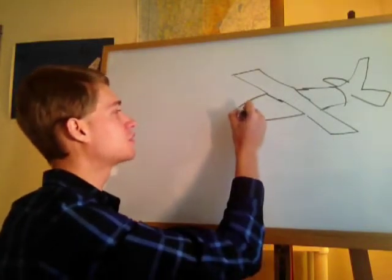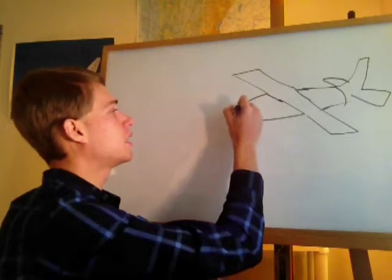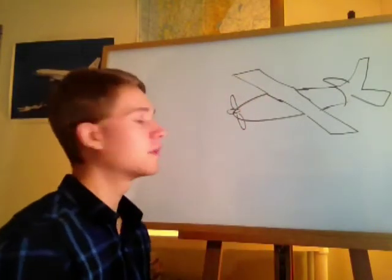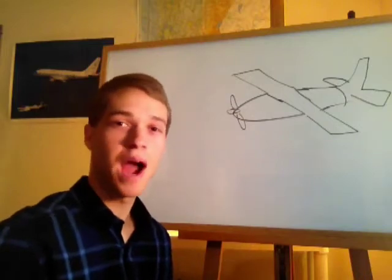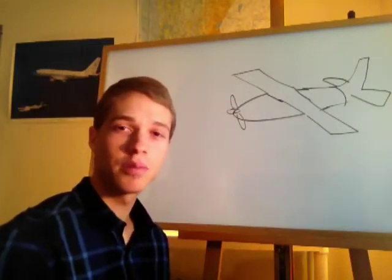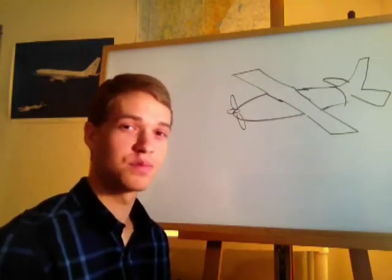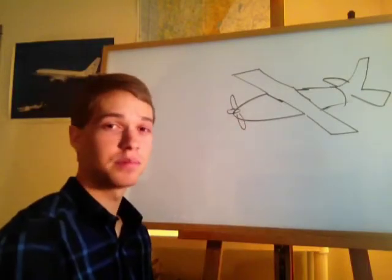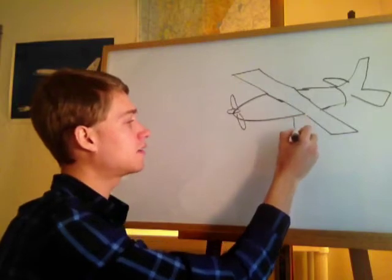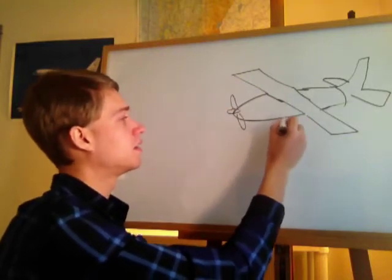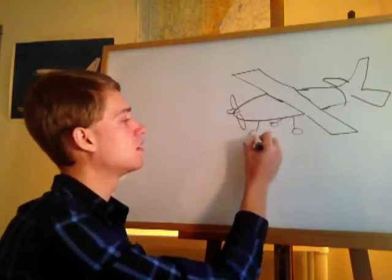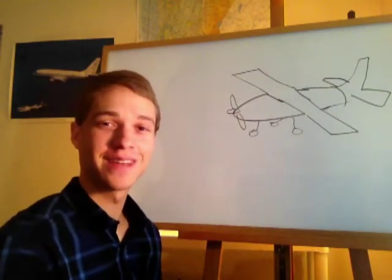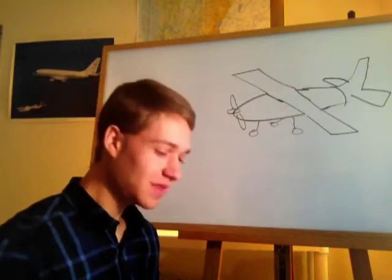Then you've got some sort of means of propulsion. In this case we have a propeller. The propulsion source is called the power plant — it's where your power is produced. In this case it's a piston power propeller. And finally, the last component is those little rolling things called wheels. The aviation term for that is landing gear.